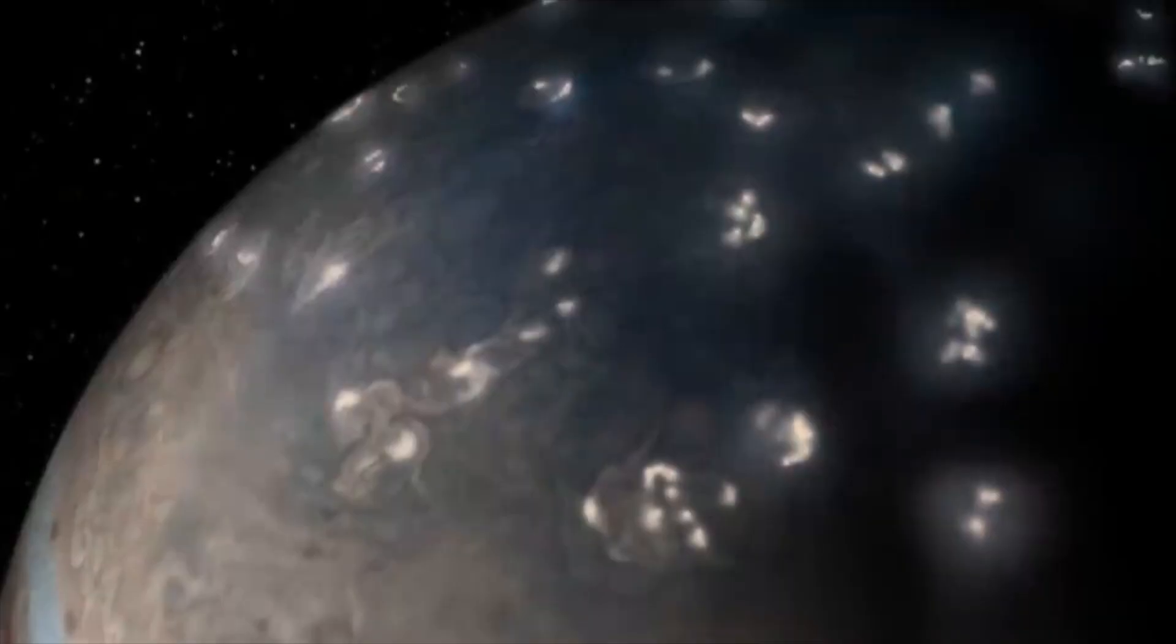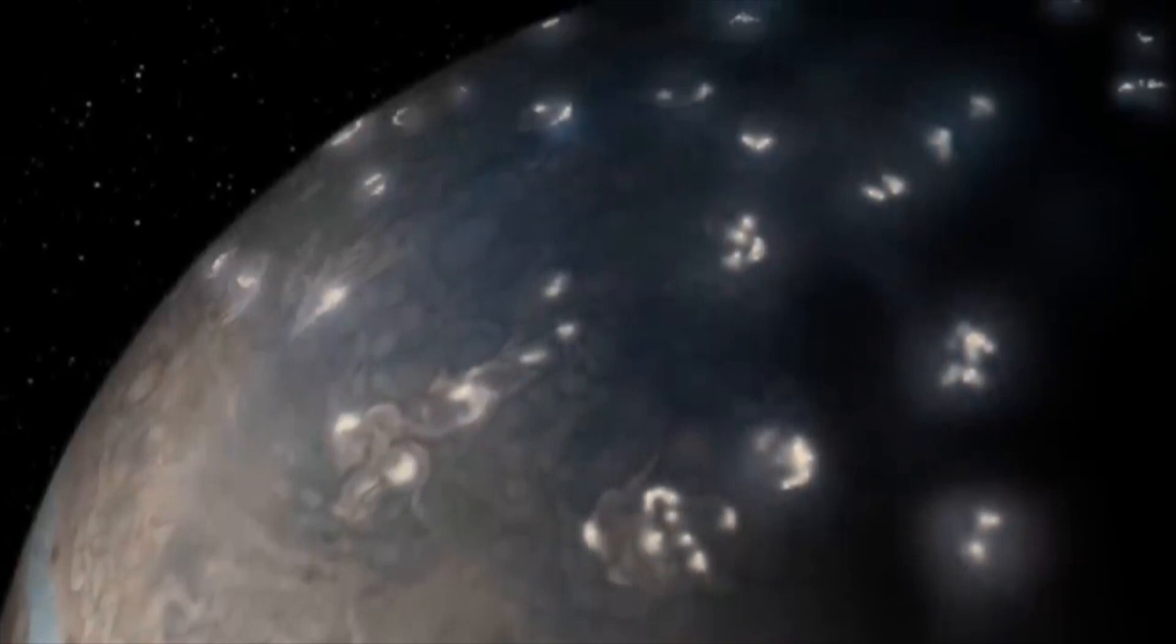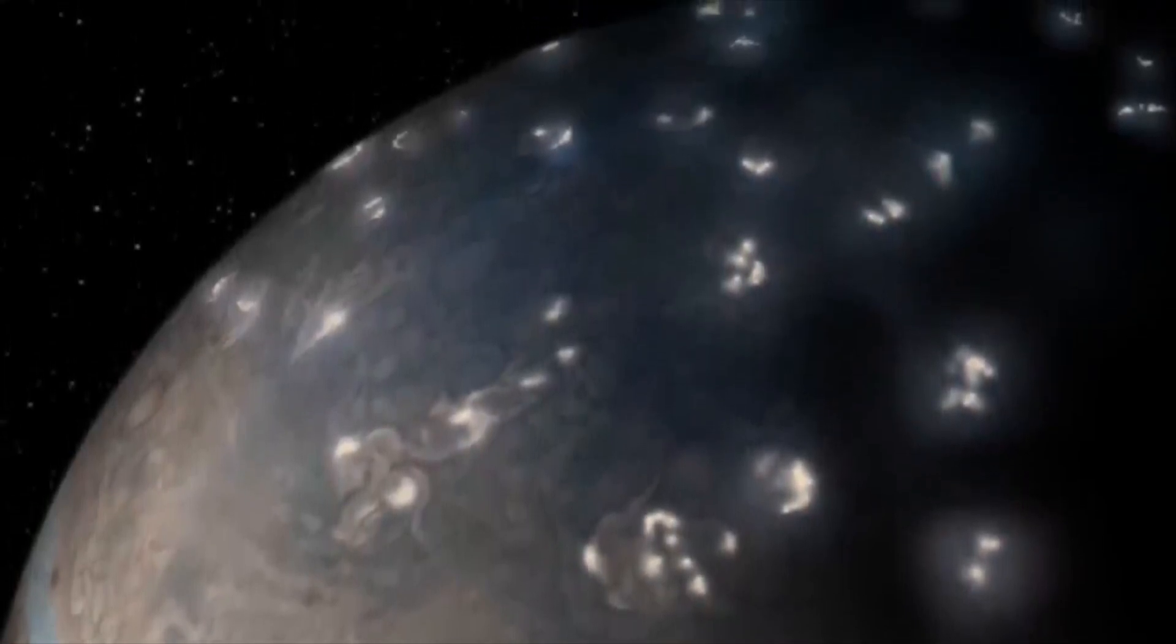Additionally, storm clouds on Jupiter are turbulent and have unpredictable environments with updrafts that propel water droplets upward and downdrafts that simultaneously blast hail and tiny ice particles downward.